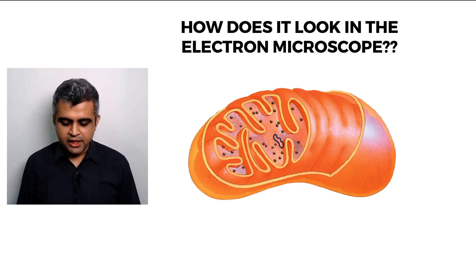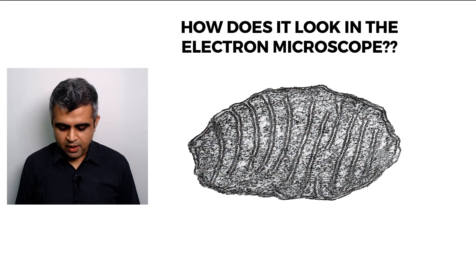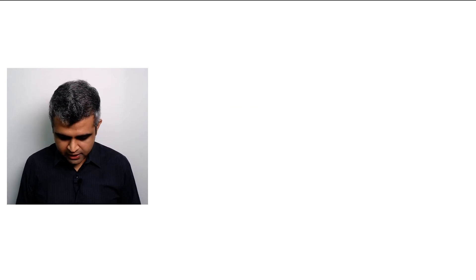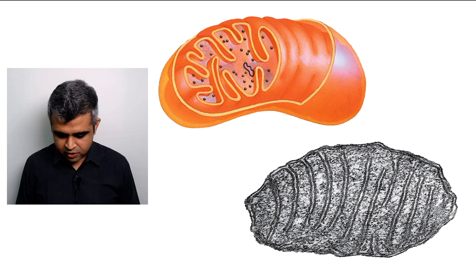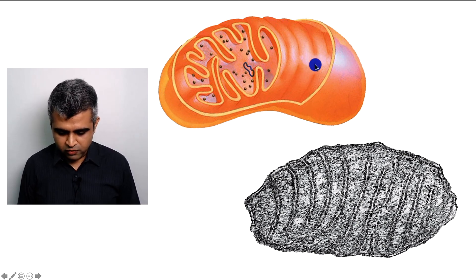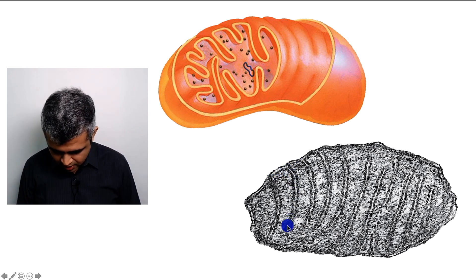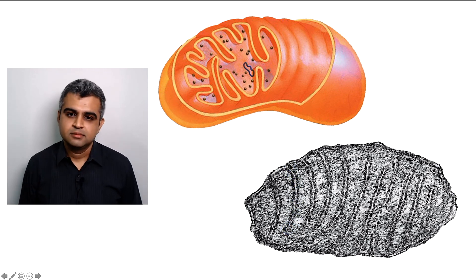Under the electron microscope, the mitochondria can be compared to its illustration: the outer membrane is visible as a smooth boundary, the inner membrane is visible inside it, and the infoldings — the cristae — are clearly seen as the folded inner structures.